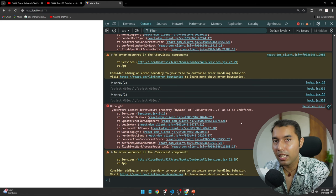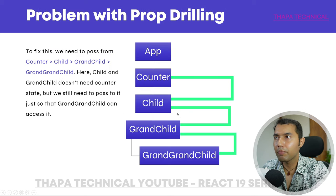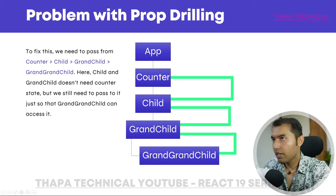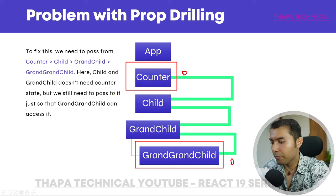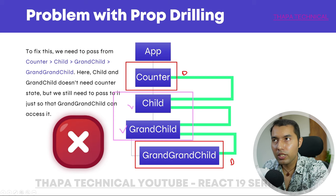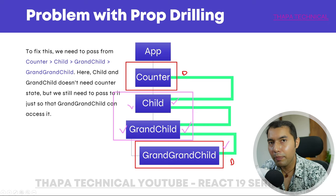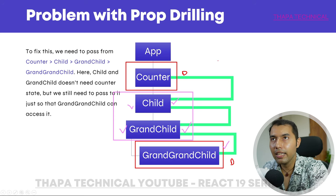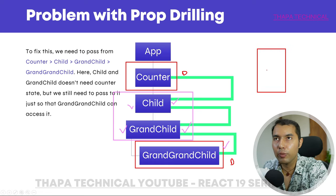यही आज इस वीडियो का main मकसद था आपको बताना। Context API इसलिए होता है — अगर मेरे grand-grand-child को data चाहिए होता है, तो बीच के सारे components को बिना disrupt करे directly data pass नहीं हो सकता। Context API इस problem को solve करने के लिए आता है। हमने एक अलग सा separate warehouse बना लिया — जिसका नाम आपने 'store' रख दिया — और यही आपका context API है।